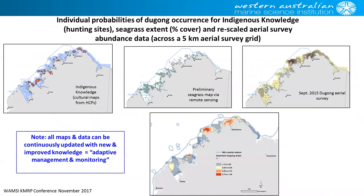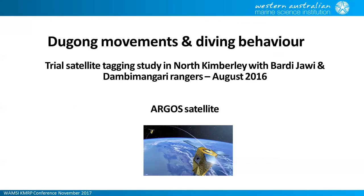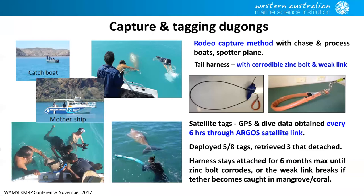For Dugong movement and diving behavior, the standard technique is satellite tagging. The Bardi Jawi group on the Dampier Peninsula have experience with Dugong tagging on multiple occasions and were happy to work with Pete and share their skills with other rangers. They set out to tag ten animals in a high-density area around the tip of Dampier Peninsula and into Talbot Bay. However, only five animals could be tagged due to low animal numbers at the time — four young adult males and one adult female.